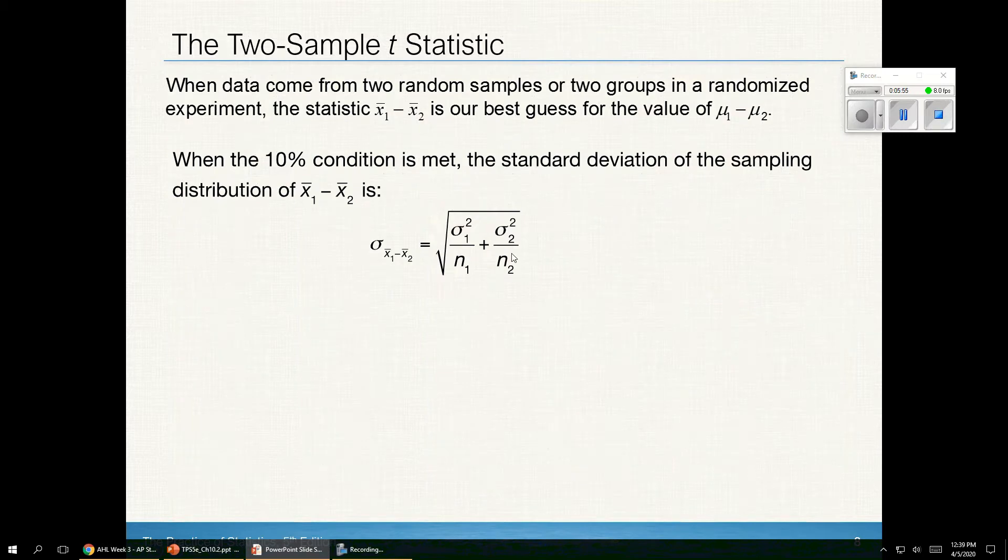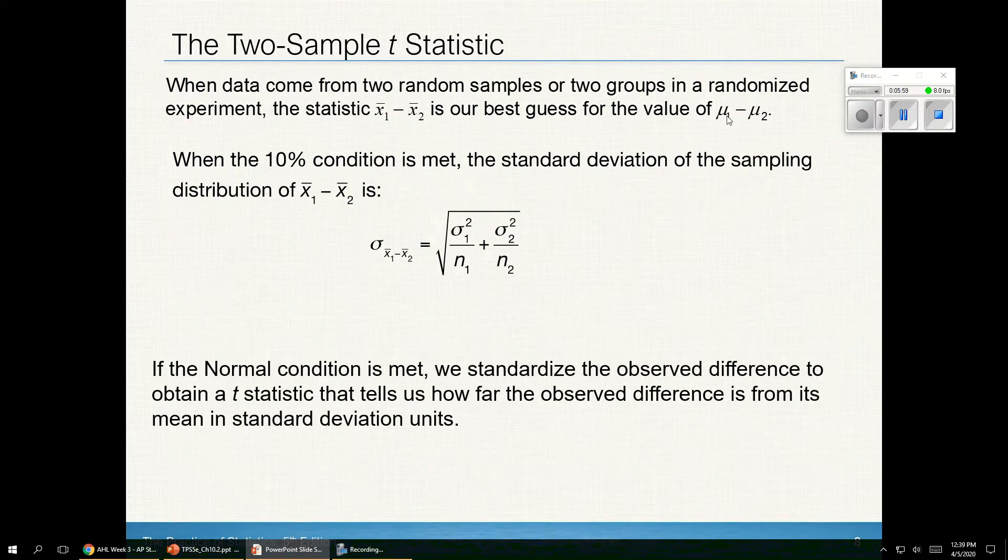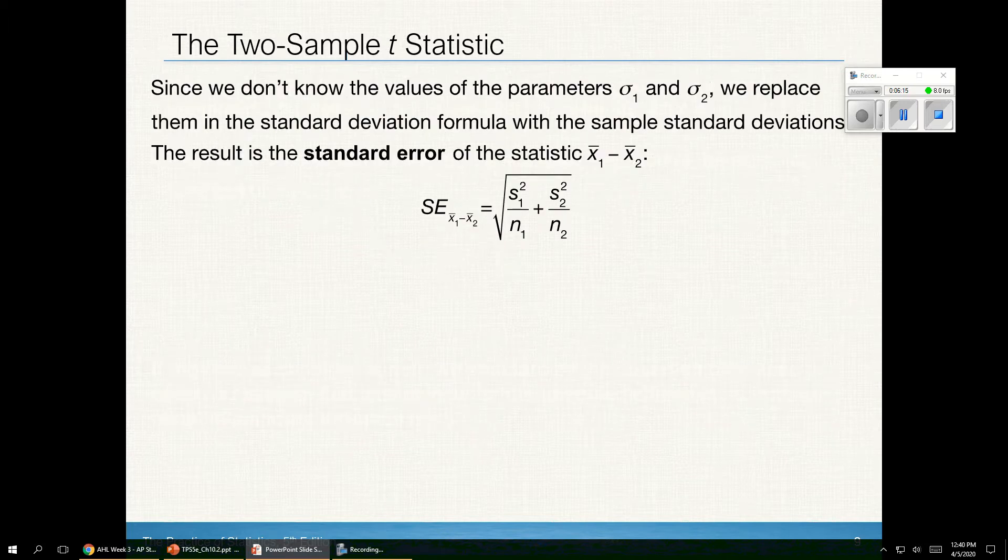So here's a formula talking about the 10% rule here. The center being μ₁ minus μ₂ is our best guess. And if the normal condition is met, we standardize the observed difference to obtain a t-statistic that tells us how far the observed difference is from the mean in standardized units.